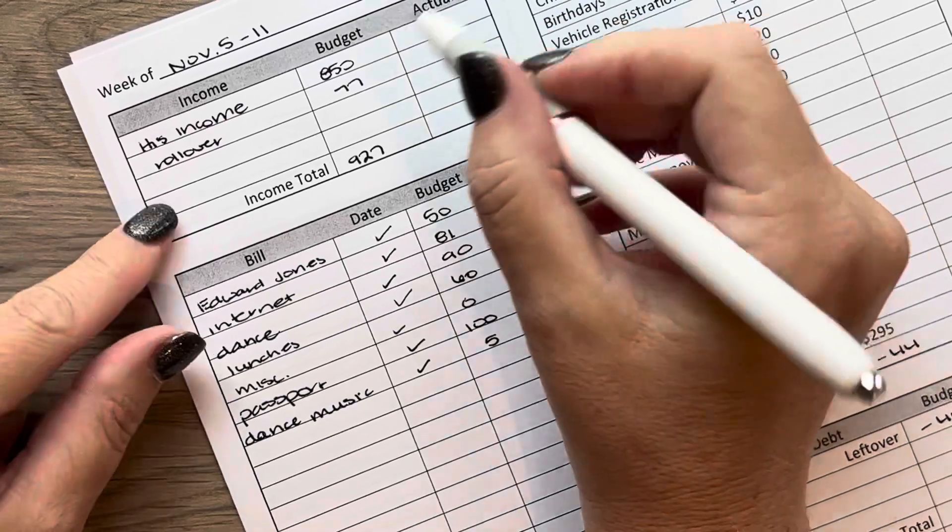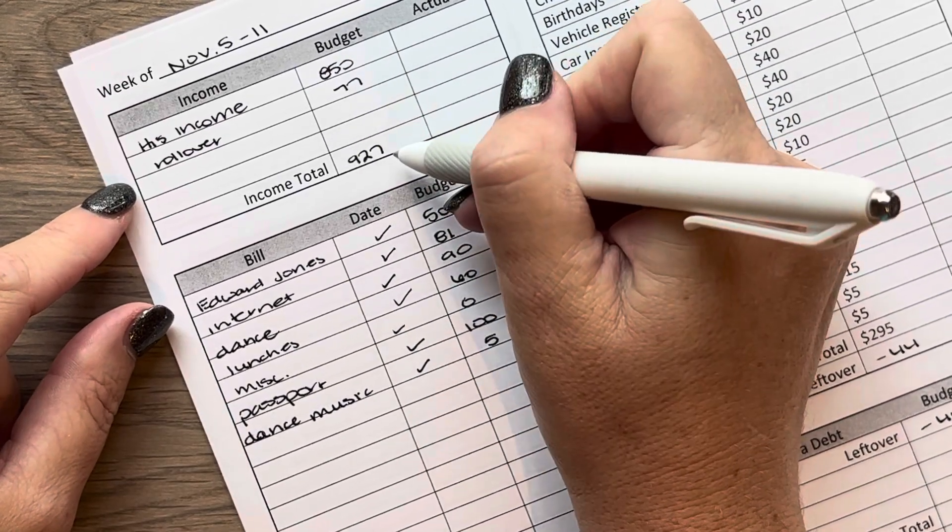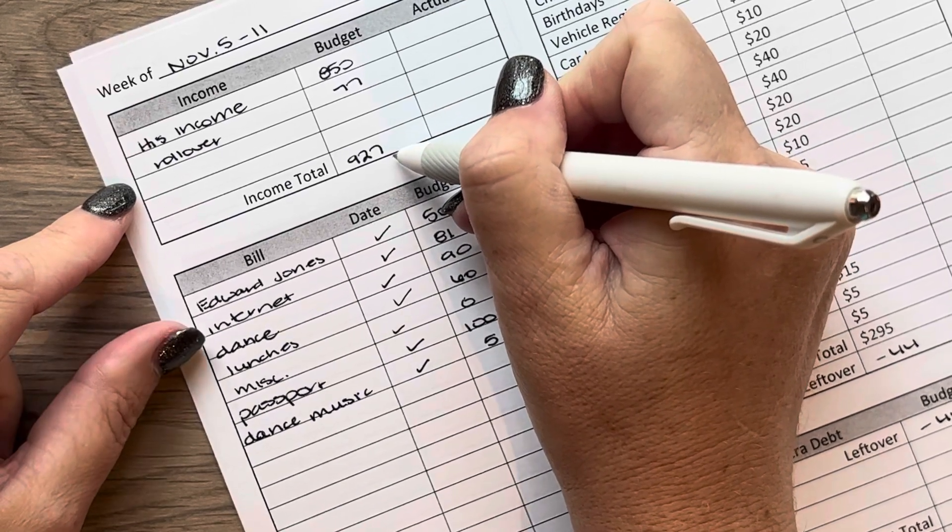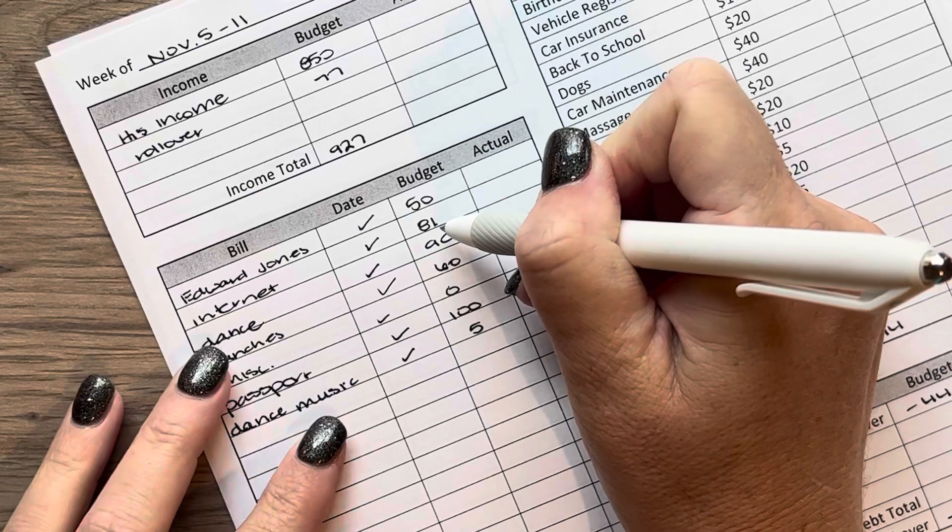So my husband did get paid his $850 and we did roll over $77 from the previous week which comes down to $927. Edward Jones did come out for $50. Internet was $81.